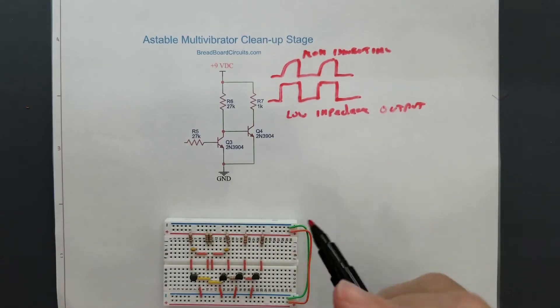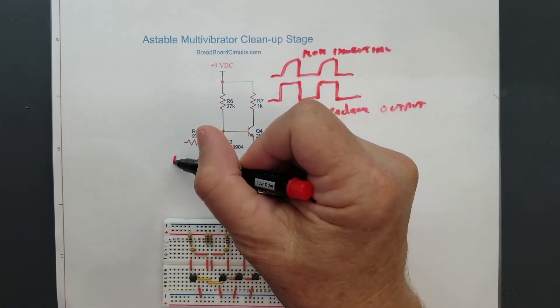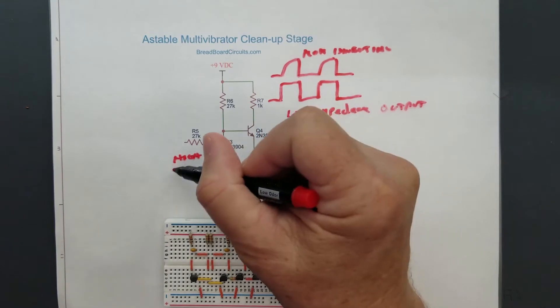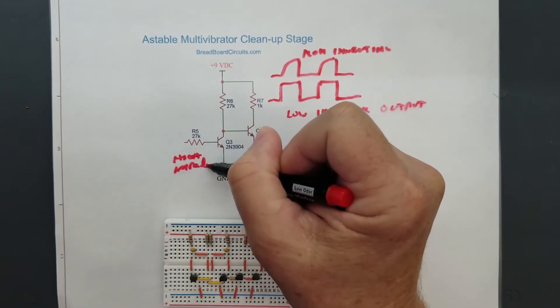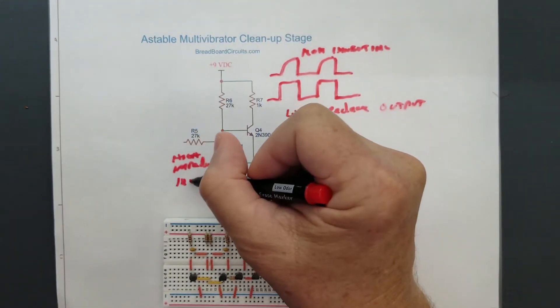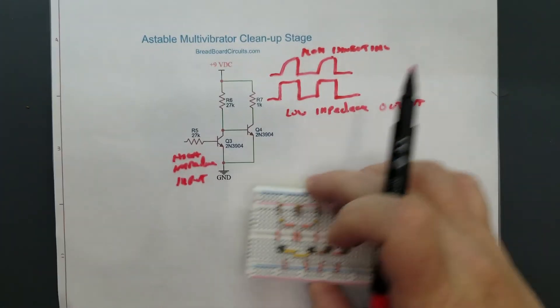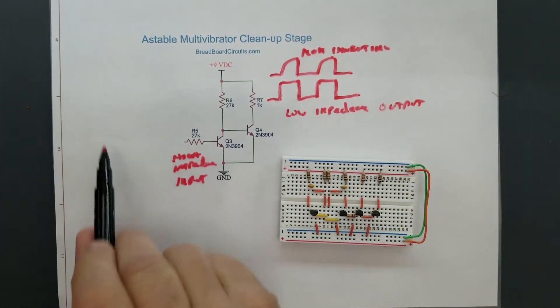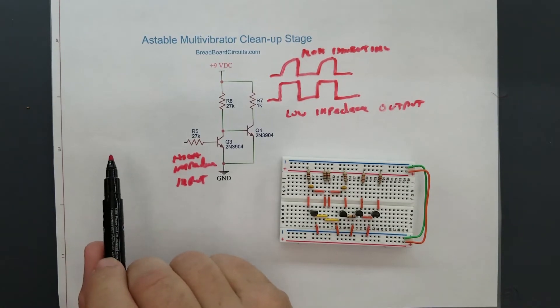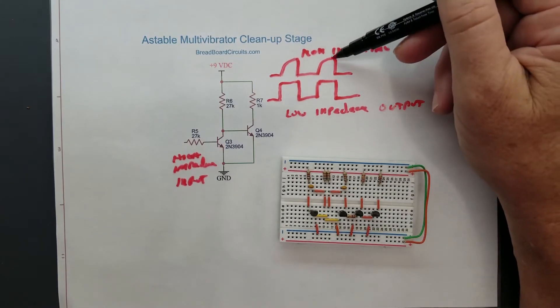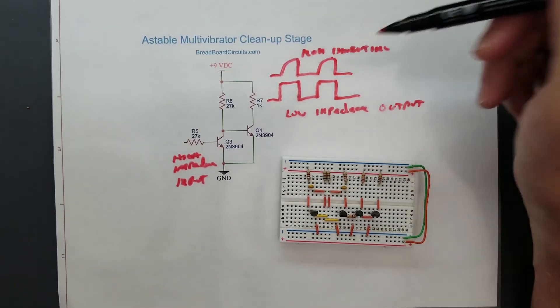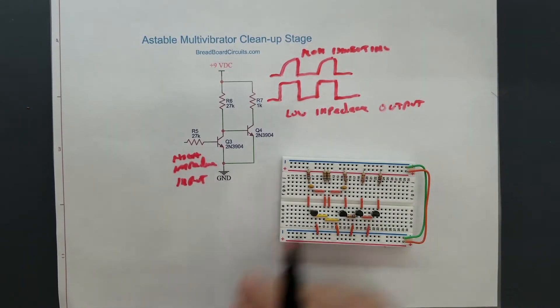We're going to want a high impedance input because we don't want to affect our basic astable multivibrator. We don't want to affect the timing or the symmetry of the waveform. We've got this, which isn't a great waveform. We don't want to mess it up anymore. So we want to keep it as it is. We're going to have our high impedance input.